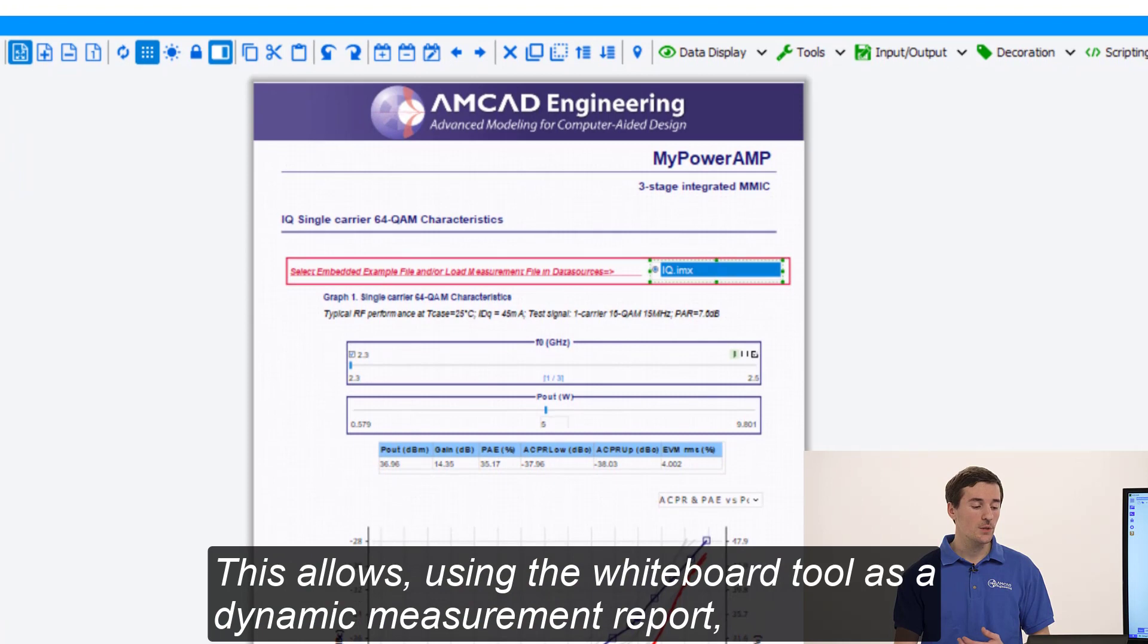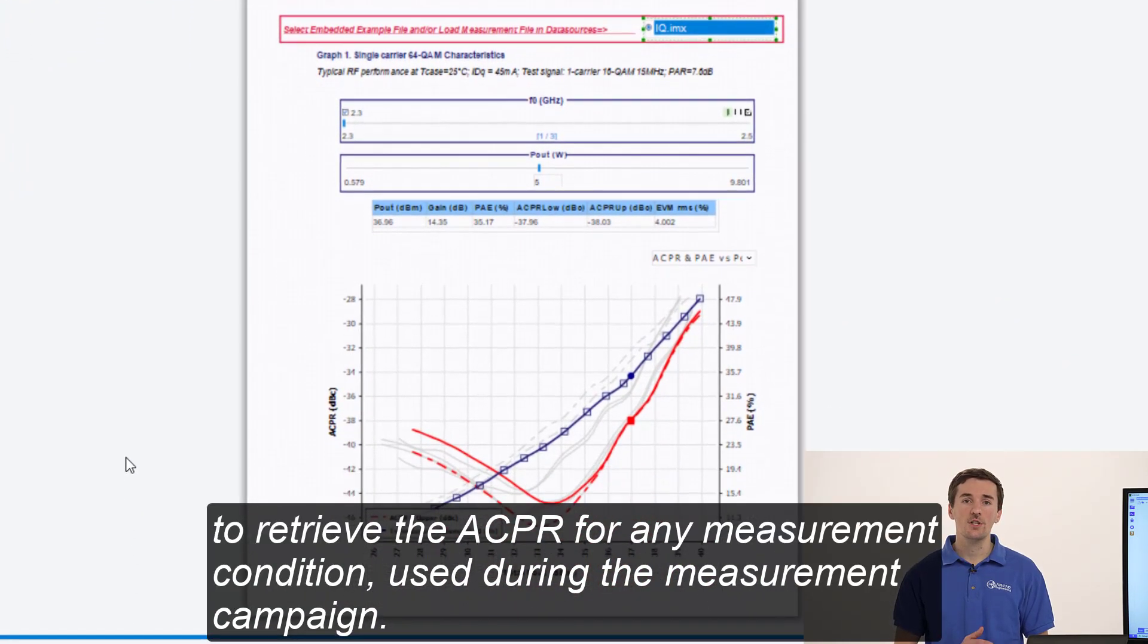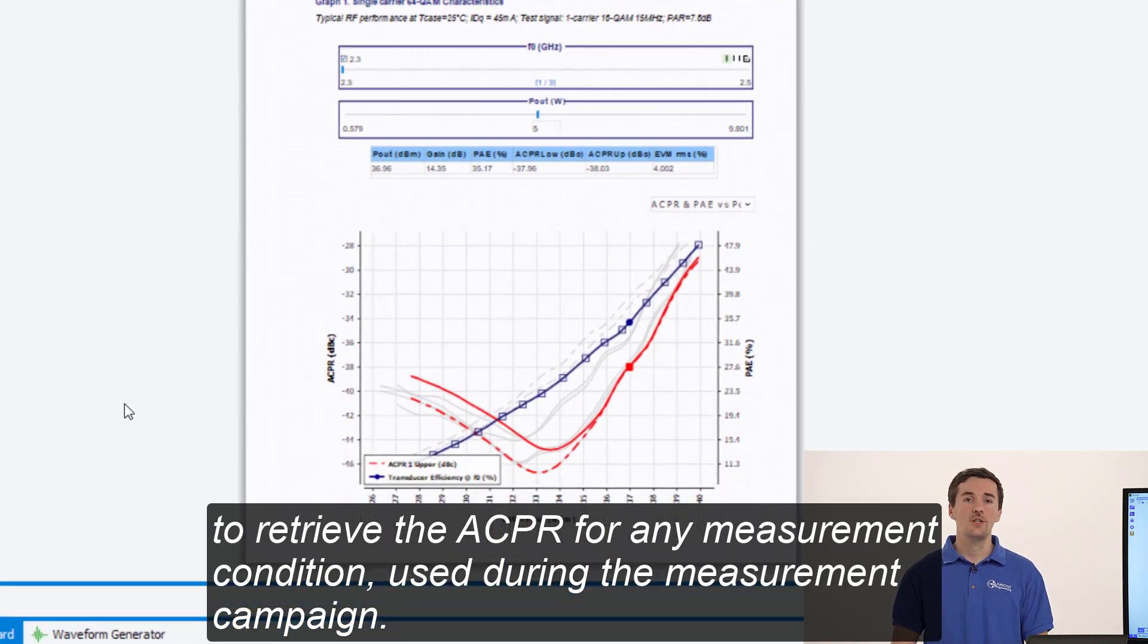This allows, using the whiteboard tool as a dynamic measurement report, to retrieve the ACPR for any measurement condition used during the measurement campaign.